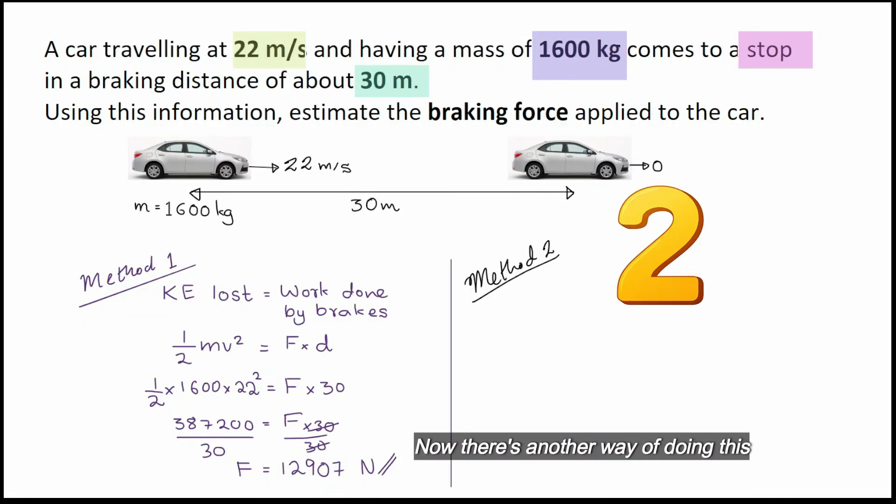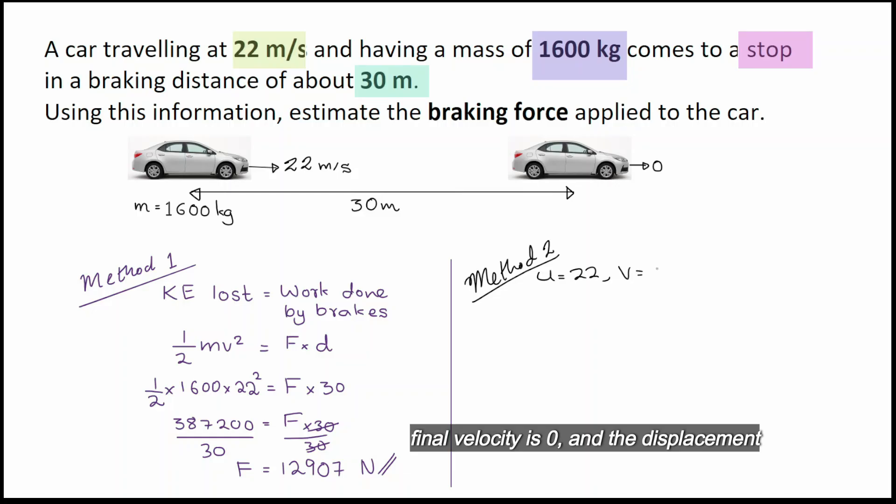Now there's another way of doing this question. Now this time we're just going to use equations of motion. So we know the initial velocity is 22, final velocity is zero, and the displacement here is 30. So we need to find the acceleration.